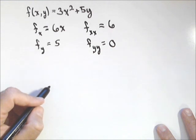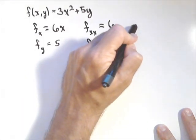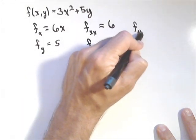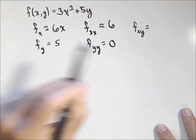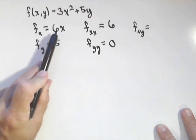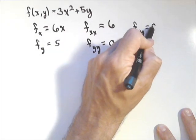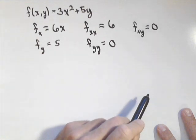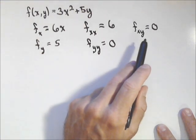Finally, we have something we call the mixed partials. We have f sub xy, which is going to be f sub x, now with respect to y. So we're taking the derivative of 6x, but with respect to y. So x is now a constant as far as this next derivative is concerned. So f sub xy is actually just 0, because we're taking the derivative of a constant with respect to y.